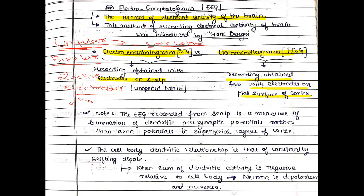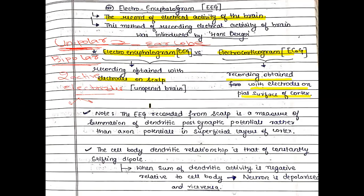This method of EEG — whether unipolar or bipolar — was first introduced by Hans Berger. The method of recording the electrical activity of the brain introduced by Hans Berger is called Berger's technique.